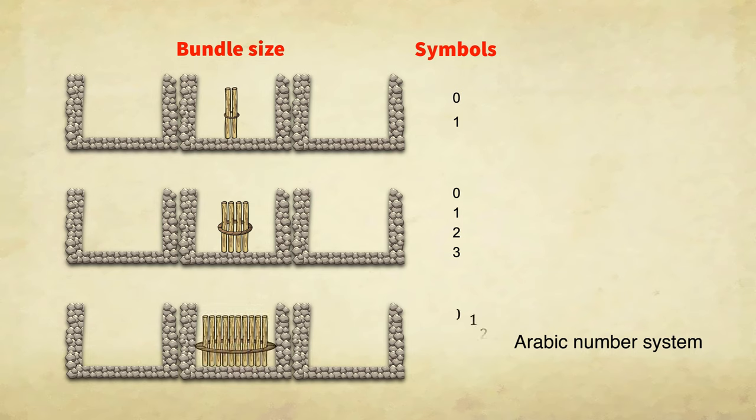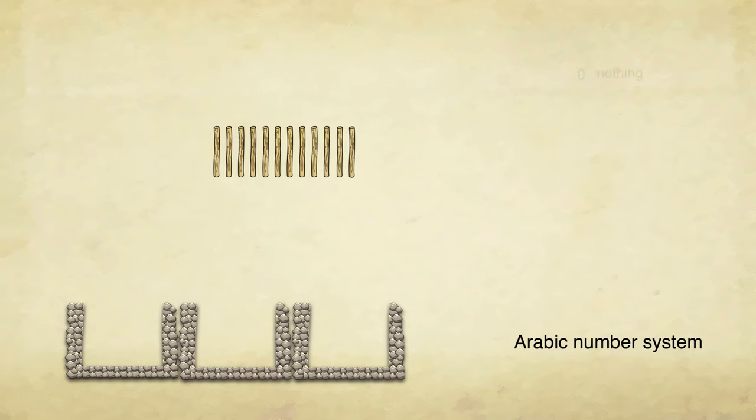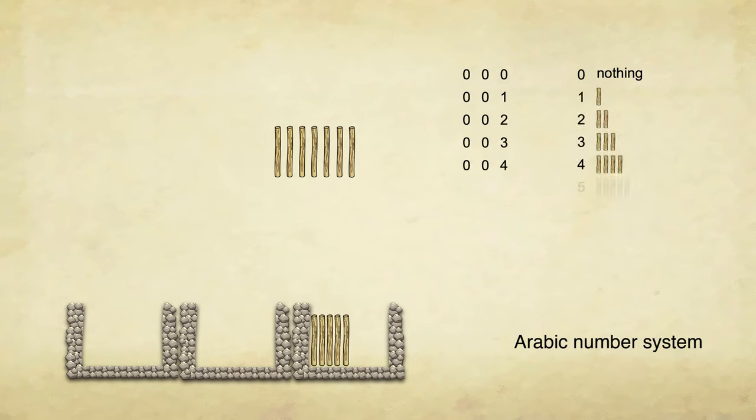For quantities under 10, we will dedicate individual symbols to represent them. The symbols can take any looks you like, and we happen to choose this specific set. As we count up from 0 to 10 in the physical world, we are progressing through the symbols sequentially in the symbol world.